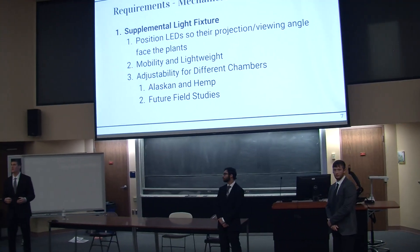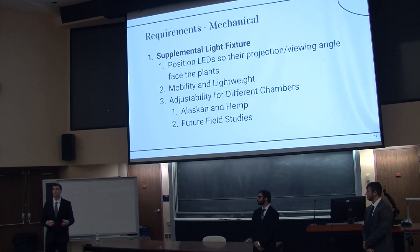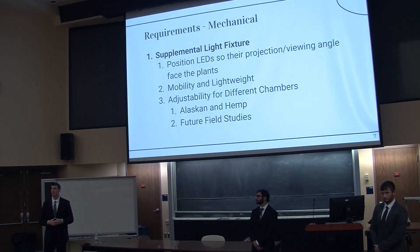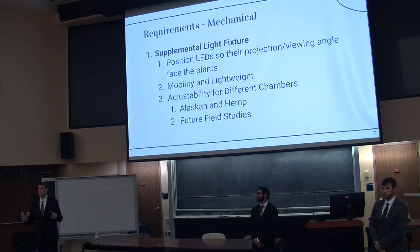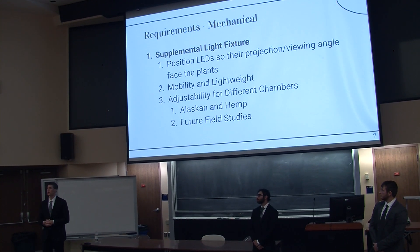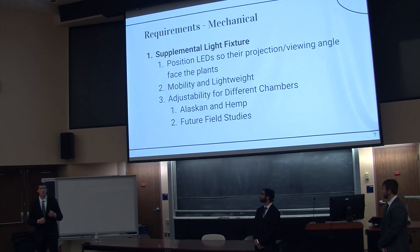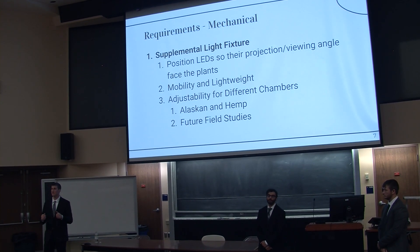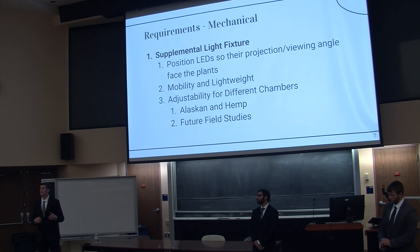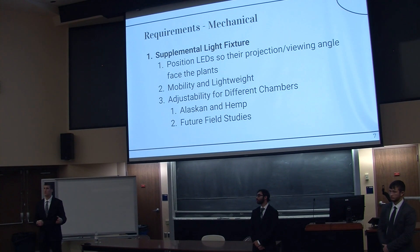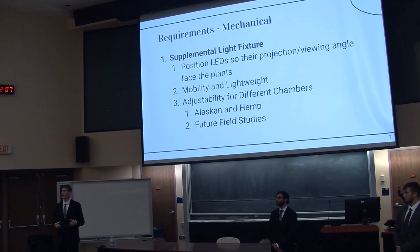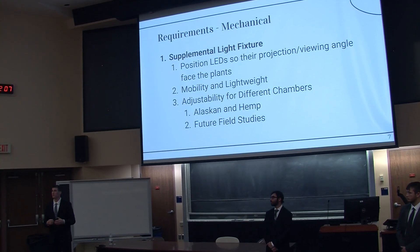For our mechanical requirements, the LEDs are centrally located within the chamber, so we want to make sure we are not obstructing them. We are going to position our supplemental light structure on the outer sides of the chamber while still being able to project LEDs towards the center, creating an equal distribution of the red and infrared LEDs at those wavelengths. We also want to make it mobile and lightweight so it's easy for the user to place into the chamber. We want it adjustable as well — the biology department is also doing pen plants, which use longer and smaller chambers.